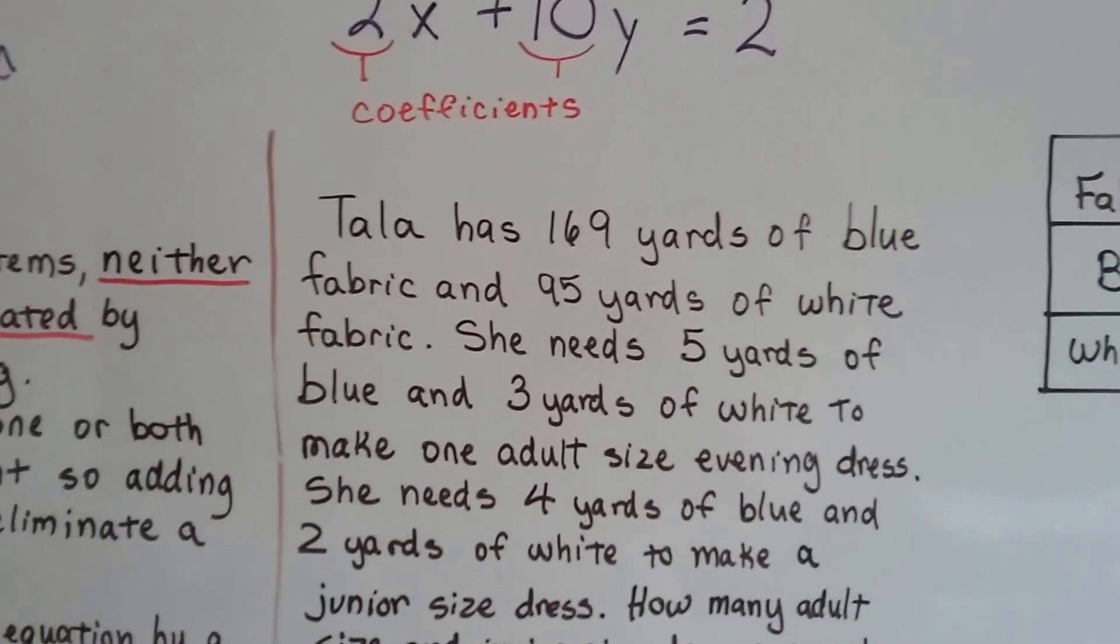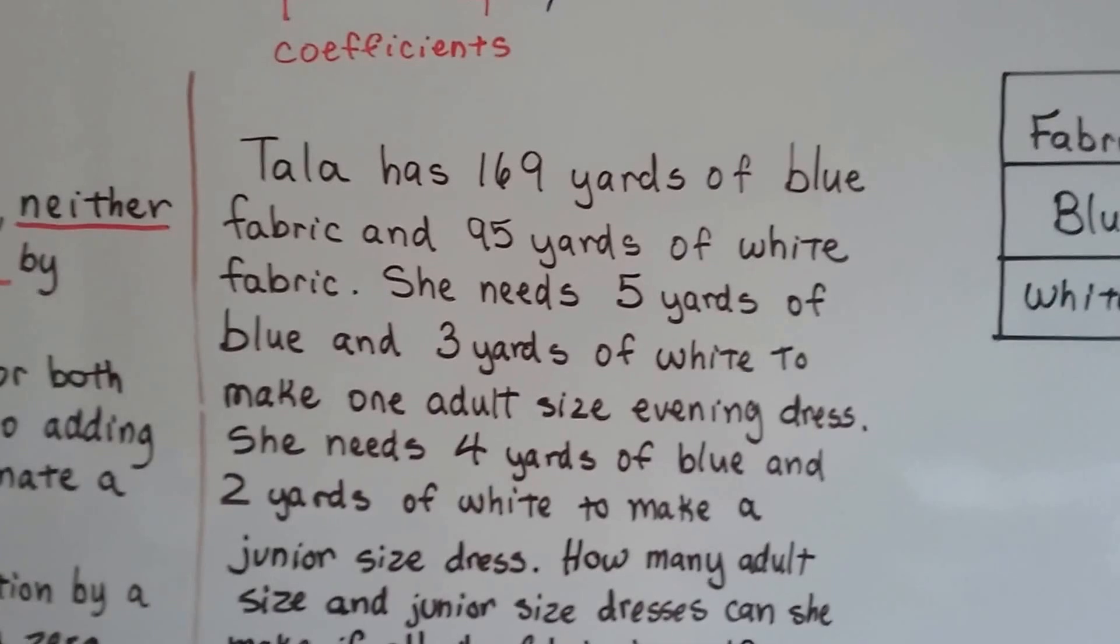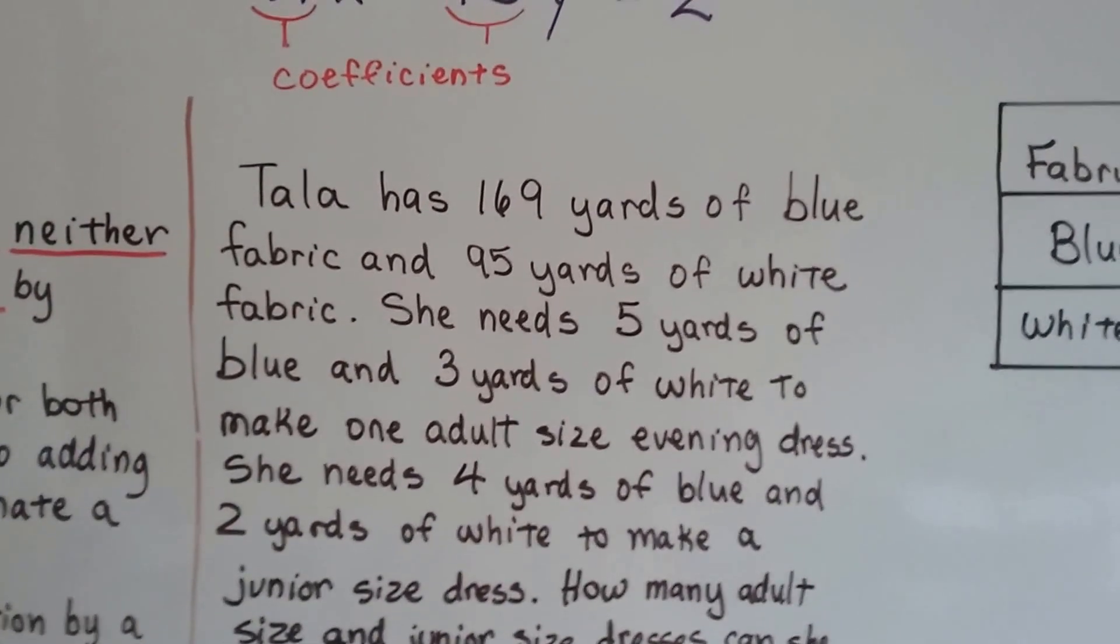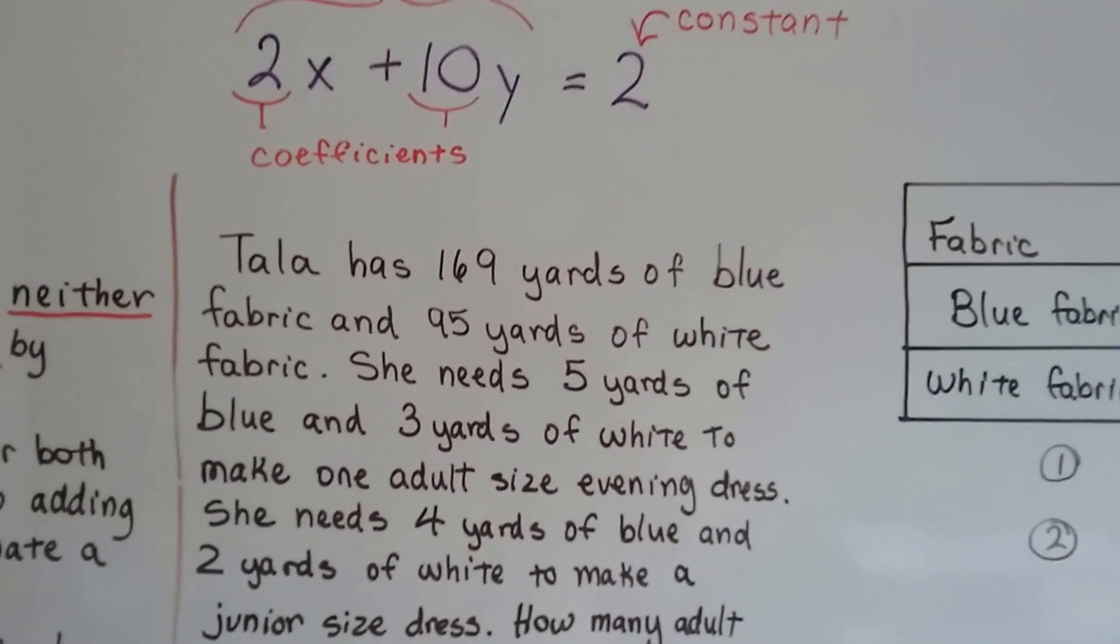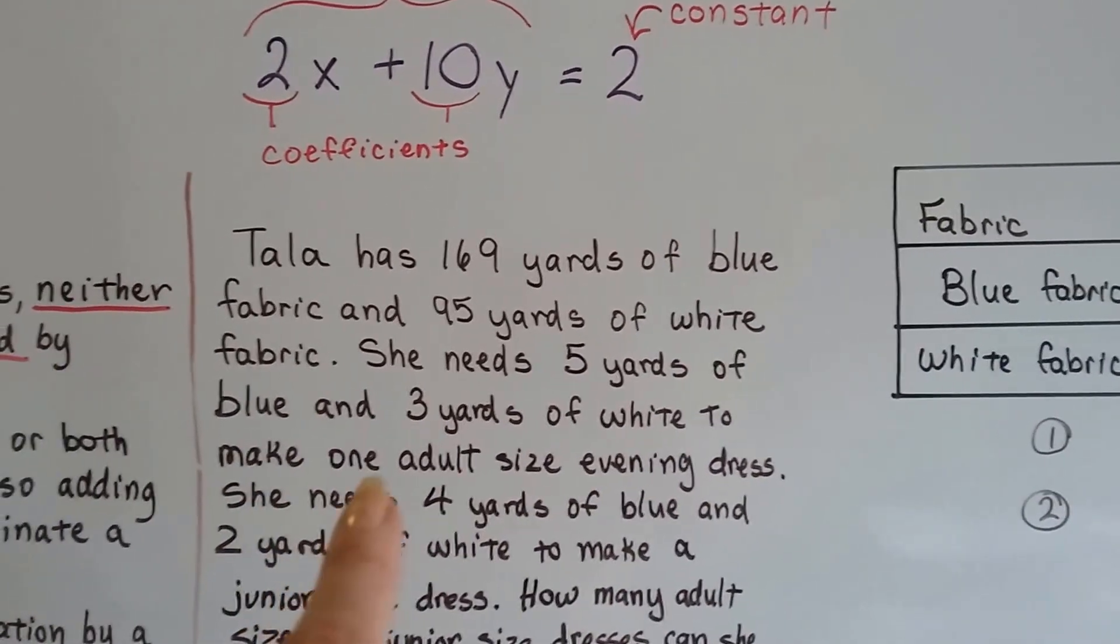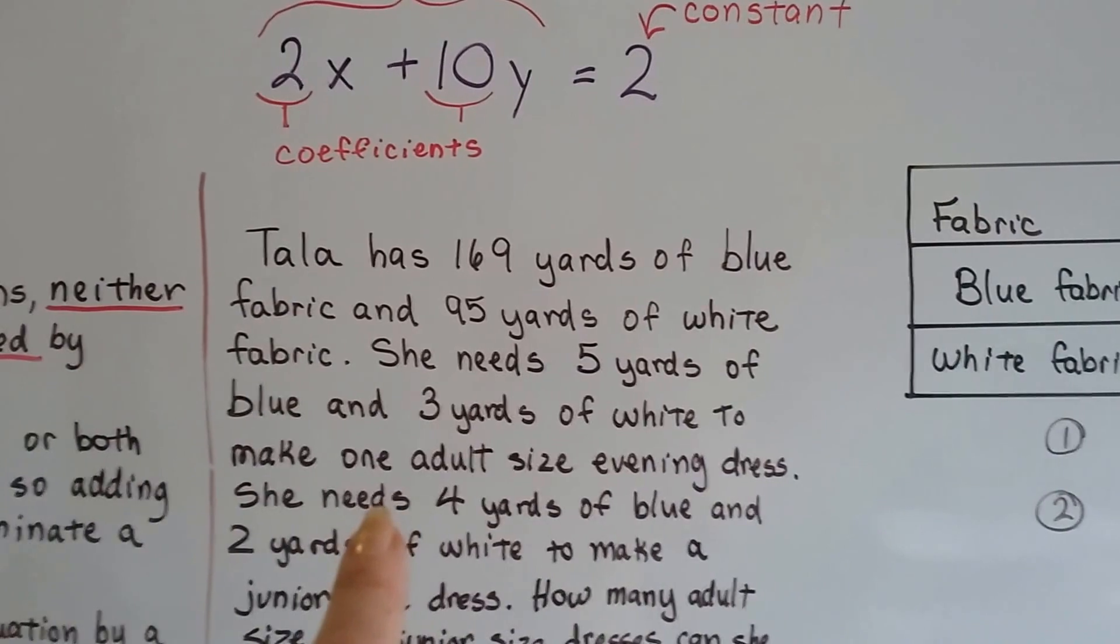So here's our word problem. Tala has 169 yards of blue fabric and 95 yards of white fabric. She needs 5 yards of blue and 3 yards of white to make one adult size evening dress.